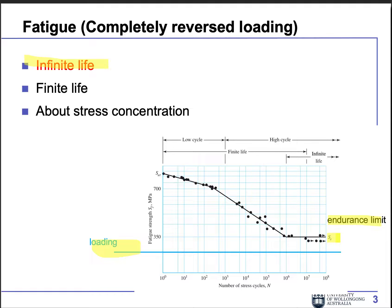For this simple loading, we use the SN diagram to analyze two different situations. One is infinite life — this is when the loading sigma_a is less than the endurance limit Se. For the problem, we calculate our loading from the force, find the stress, then find the endurance limit and do the comparison. If the loading is larger than the endurance limit, we have to look at the finite life situation. When we calculate the loading, sometimes we have to consider the stress concentration.